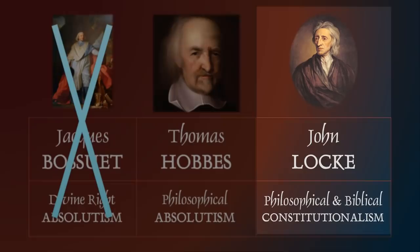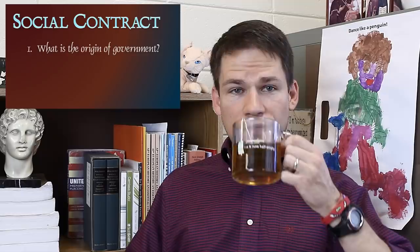So Hobbes and Locke are both going to give us two versions of a social contract. Keep in mind that Rousseau wrote a book called The Social Contract, but he's not the first philosopher to address this subject. What the social contract essentially covers is two things: first, what is the origin of government — how did people decide to have government? And second, how much authority should the state have over the individual?